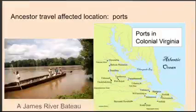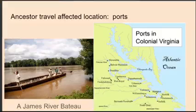Understanding the transportation systems available to your ancestors helps you guess destinations or places of origin. The basic mode of east-west travel in early Virginia was by boat on rivers connecting coastal ports with inland farms, towns, and villages. The principal traveled rivers in colonial Virginia were the James, Appomattox, Roanoke, Nottoway, York, Rappahannock, Potomac, and the Shenandoah. The James River bateau was a shallow draft river craft used between 1775 to 1840 to transport tobacco and other cargo along the James River and its tributaries in the Commonwealth of Virginia.